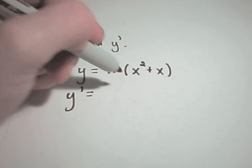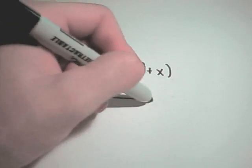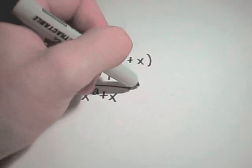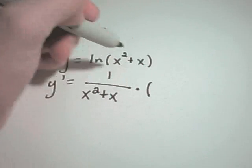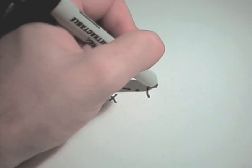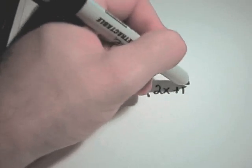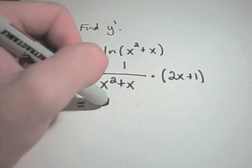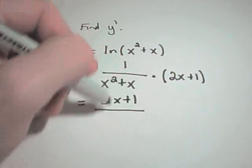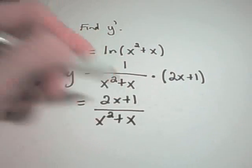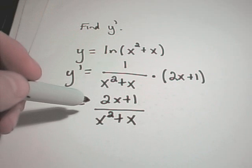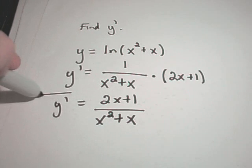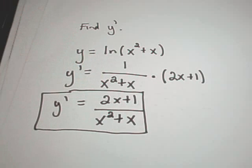I'm using this derivative rule. It says you get 1 over whatever's inside the parentheses, so x squared plus x. Then you multiply that by the derivative of the inside, which is simply 2x plus 1. You could rewrite this with 2x plus 1 on top and x squared plus x on the bottom. It looks like nothing's going to factor out that you can cancel, so this would be your derivative.